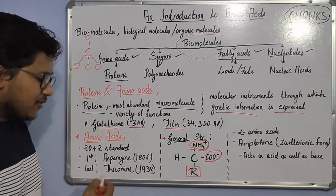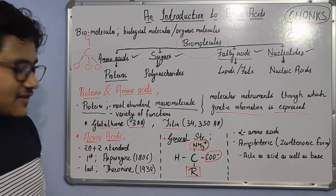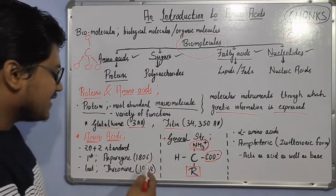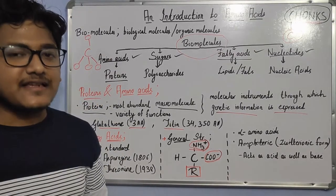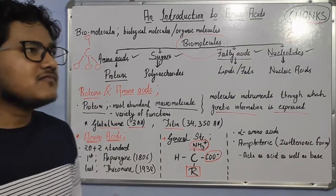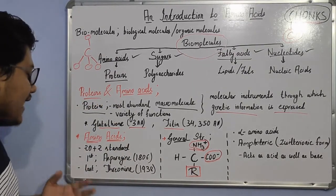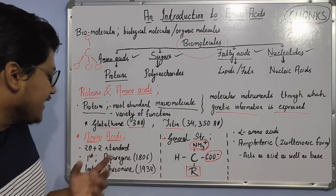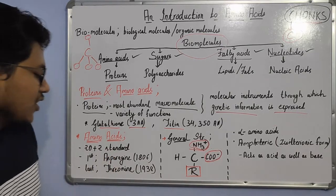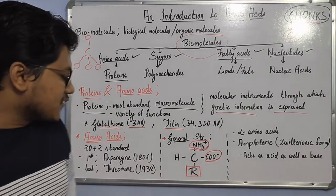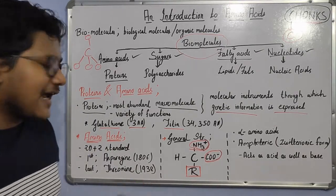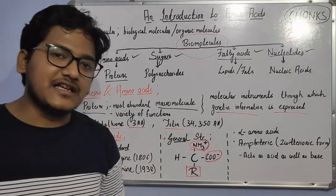The first amino acid that was discovered was asparagine, discovered around 1806, and the last of the 20 amino acids was threonine, which was discovered around the year 1938.